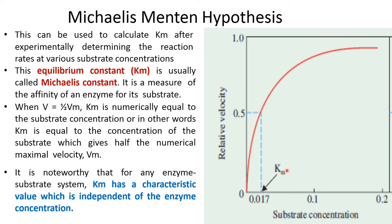This equilibrium constant KM, when V is equal to half the Vmax, is numerically equal to the substrate concentration. In other words, KM equals the concentration of substrate which gives half the numerical maximum velocity.